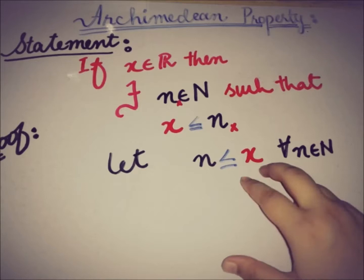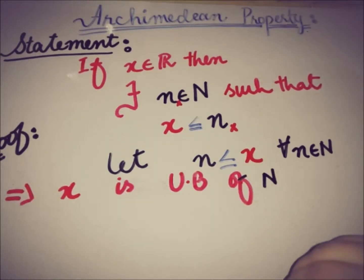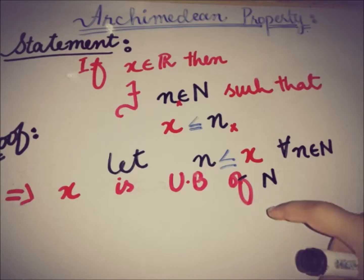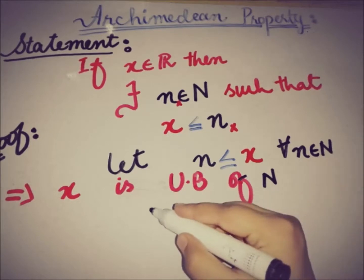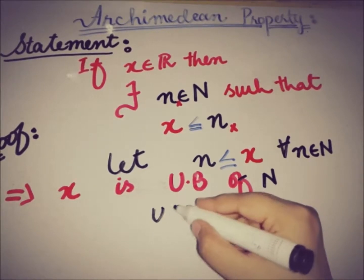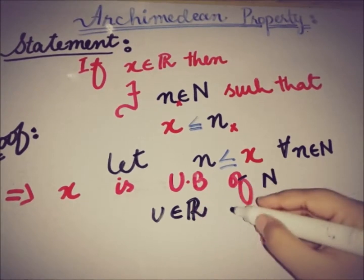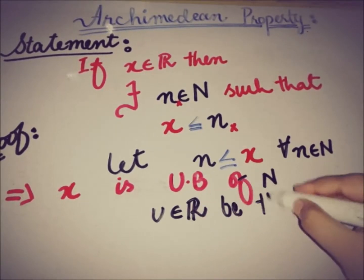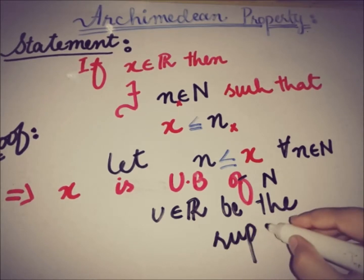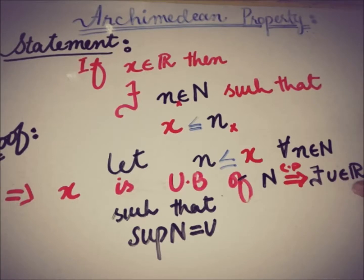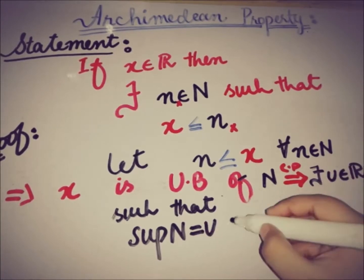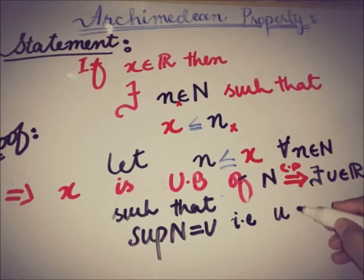So if x is the upper bound of N, then by the completeness property, if x is the upper bound of N, there must be a supremum of N as well. Let u be the supremum of N. By the completeness property, there exists u in R such that the supremum of N equals u, and u is greater than or equal to every possible natural number.